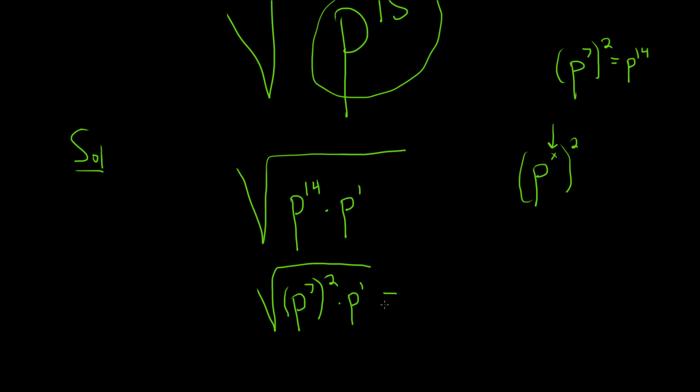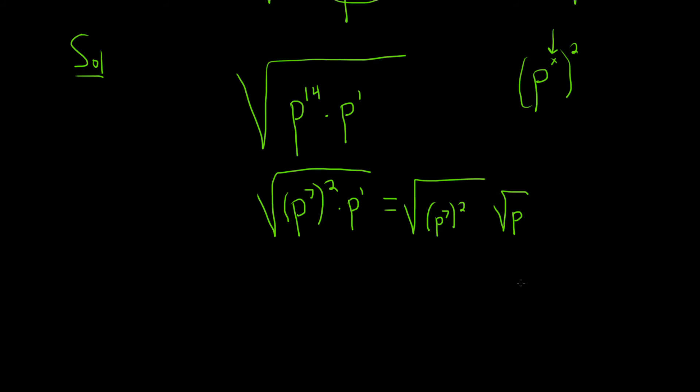And then we can break it up as the square root of p to the 7 squared, and then here we have the square root of p. The reason we did this is because now the square root will just get rid of the 2. So we have p to the 7 times the square root of p, and that will be the final answer.